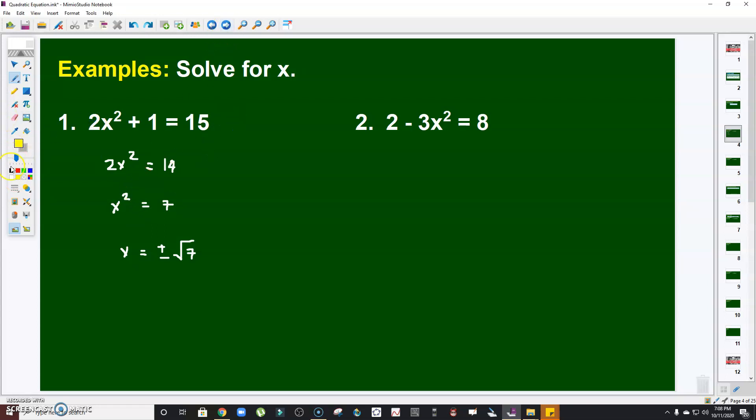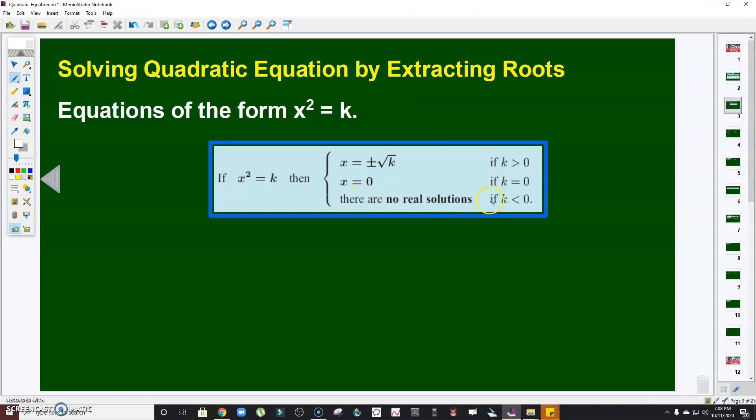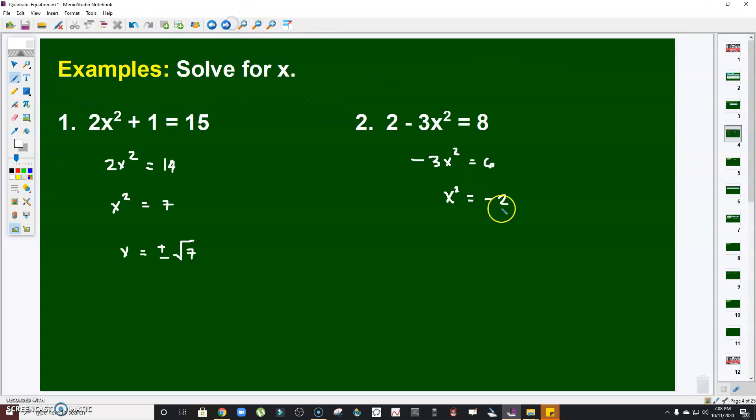Next, number 2. So 2 - 3x² = 8. Like what we did, combine like terms, that will be 8 minus 2, that will become 6. Divide both sides by negative 3. So I'm going to have a quotient of negative 2. Now, this will fall under the third case. k is less than 0, which is negative 2. Therefore, there are no real solutions.